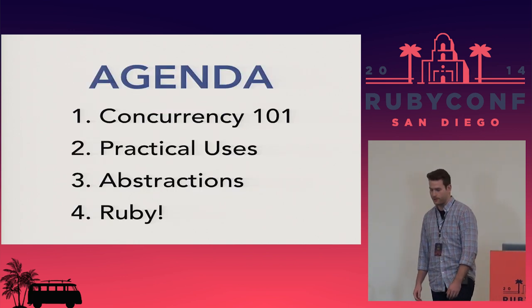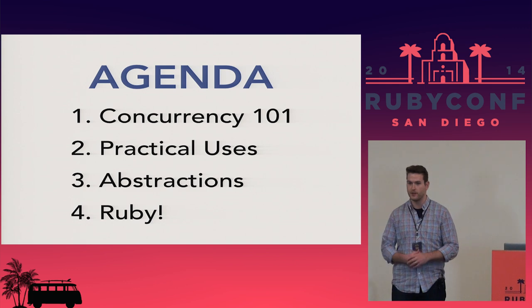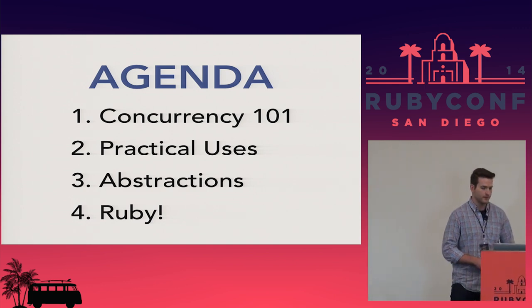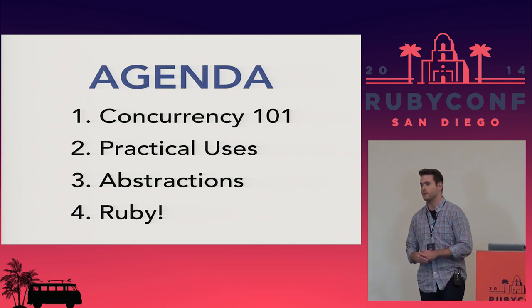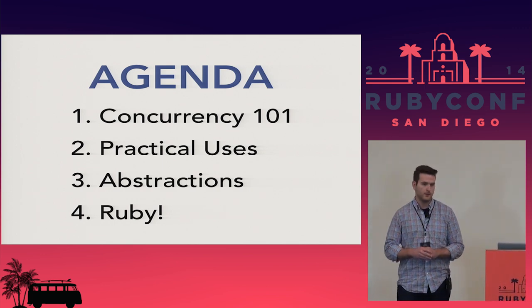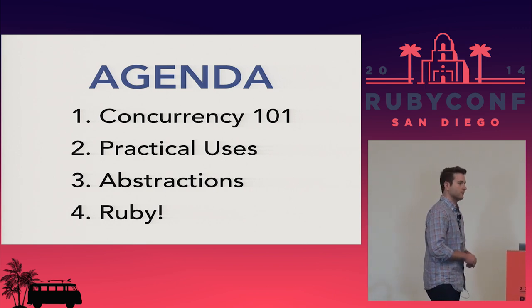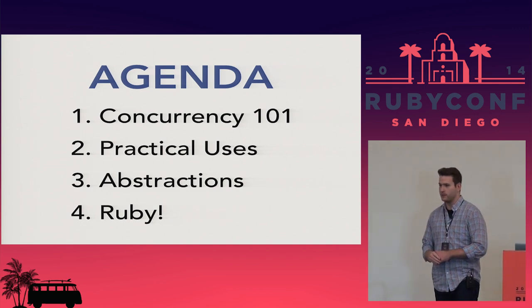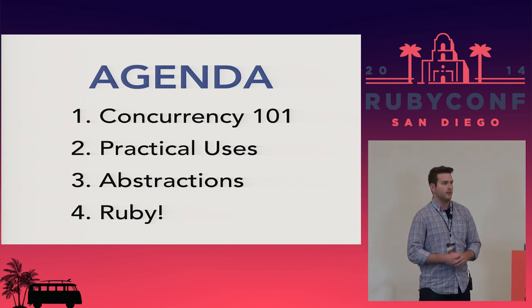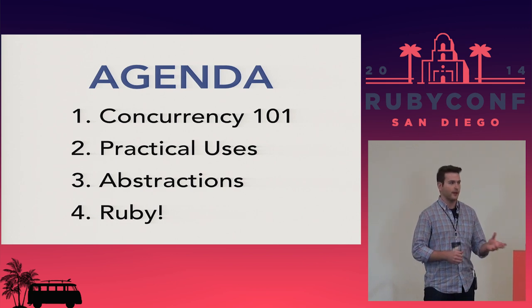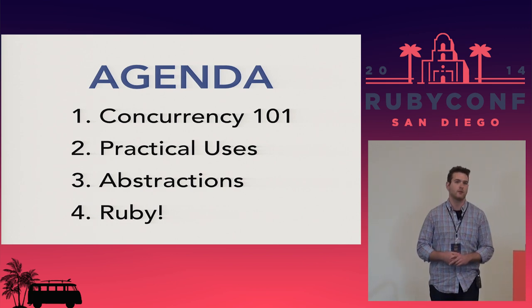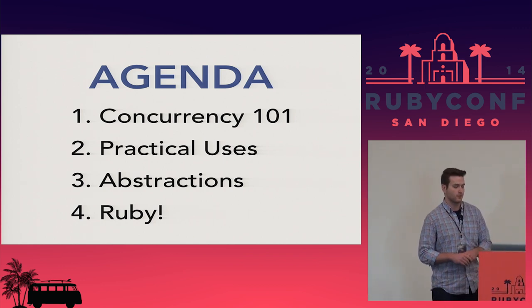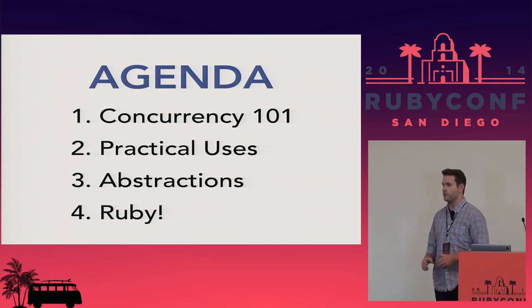So what I'm going to talk about today: we're going to start with some concurrency basics. Some of you are probably familiar with a lot of this, or others might be new to you. We'll look at some practical uses of concurrency in Ruby. A lot of the talk is actually going to be about abstractions, because that's really what concurrency is all about. We're also going to talk about Ruby, because this is RubyConf. Probably about 80% of this talk is about concurrency in general, and the other 20% is about how that relates to Ruby specifically. But concurrency is a huge, huge topic.